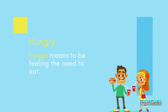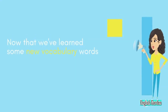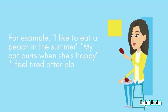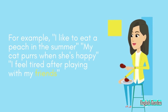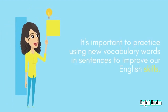Hungry means to be feeling the need to eat. Scared means to be feeling fear or nervousness. Now that we've learned some new vocabulary words, let's practice using them in sentences. For example: I like to eat a peach in the summer. My cat purrs when she's happy. I feel tired after playing with my friends. It's important to practice using new vocabulary words in sentences to improve our English skills.